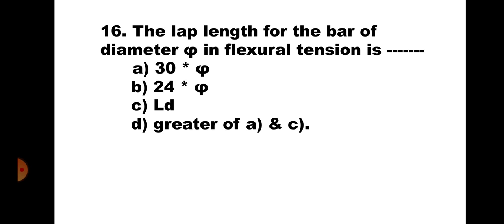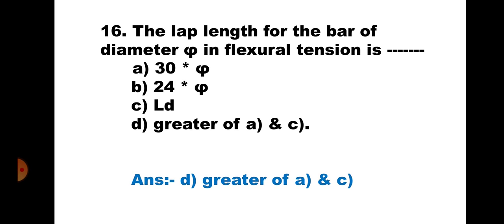Question 16. The lap length for a bar of diameter phi in flexural tension is: A. 30φ, B. 24φ, C. LD, and D. Greater of A and C. For flexural tension, the lap length should be 30φ or LD, whichever is greater. Hence, the correct answer is D. Greater of A and C.